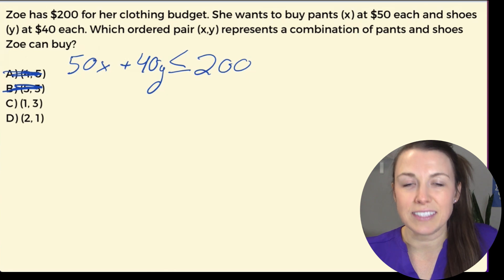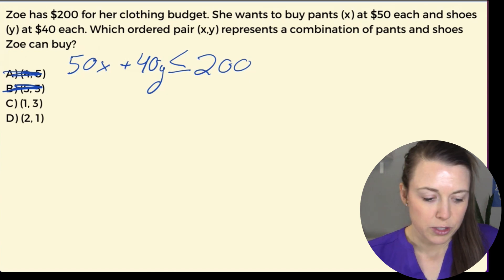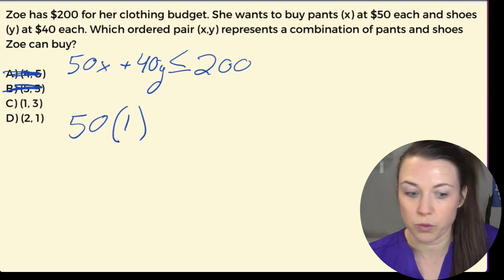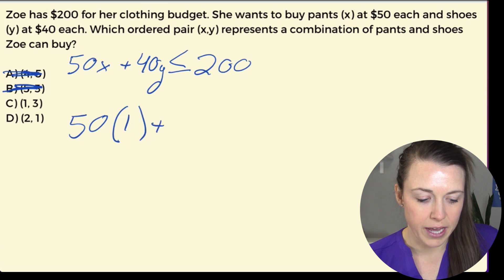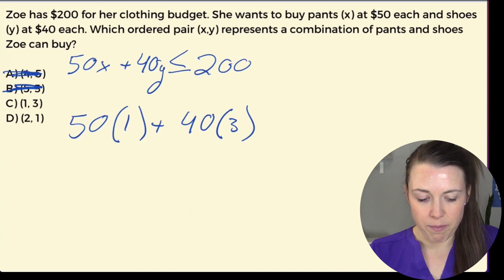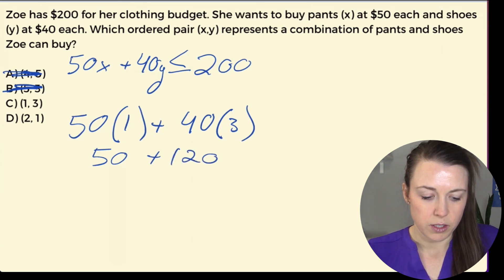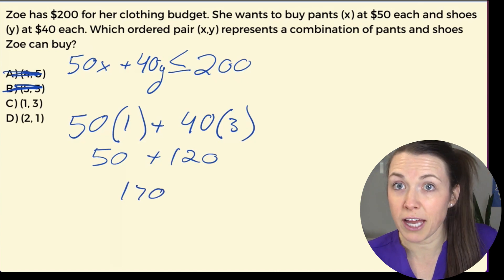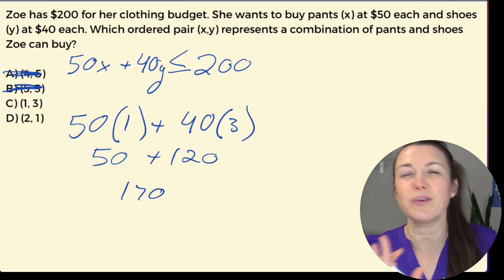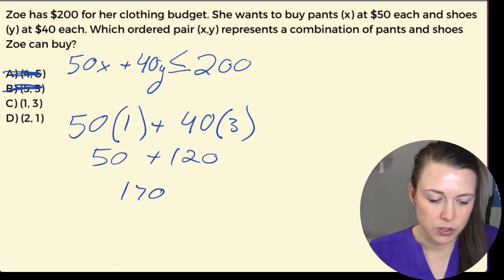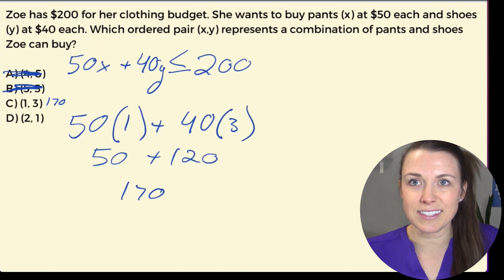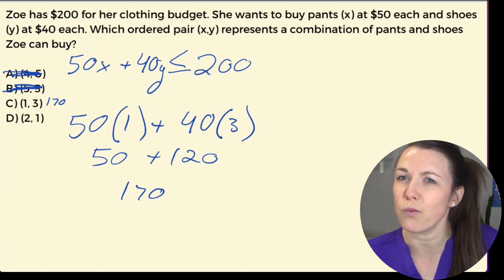C and D are looking a little bit better. So C, she has $50 for her pants times one pair of pants. So looking good so far plus 40 times 3. So now I'm at 50 plus 40 times 3, we know is 120. So now she's at 170. Could she do that? Absolutely. That would totally work with her budget. So C is 170.